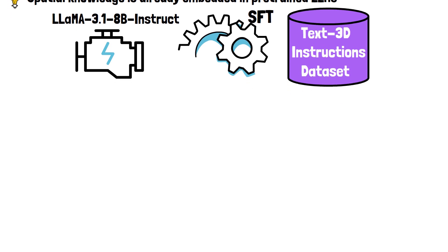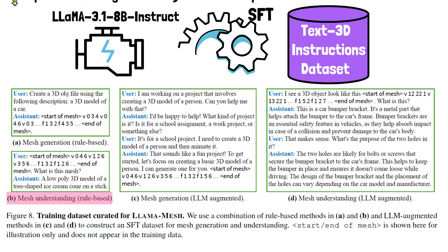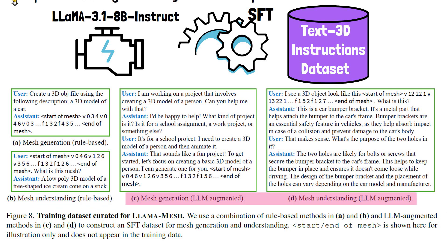We can see a few examples from the dataset in the following figure from the paper. The first type of samples is for mesh generation, where they take an object from an existing dataset and automatically generate a sample using the object label to create a prompt asking the model to generate the object, and use the actual object as the response. The second type of samples is for mesh understanding, where they again take an object from an existing dataset, use it in the prompt, and add an instruction for the model to recognize the object using the label as the response. These two types are generated with simple rules, and in addition they also use augmentation to create dialogue samples with both text and 3D objects.